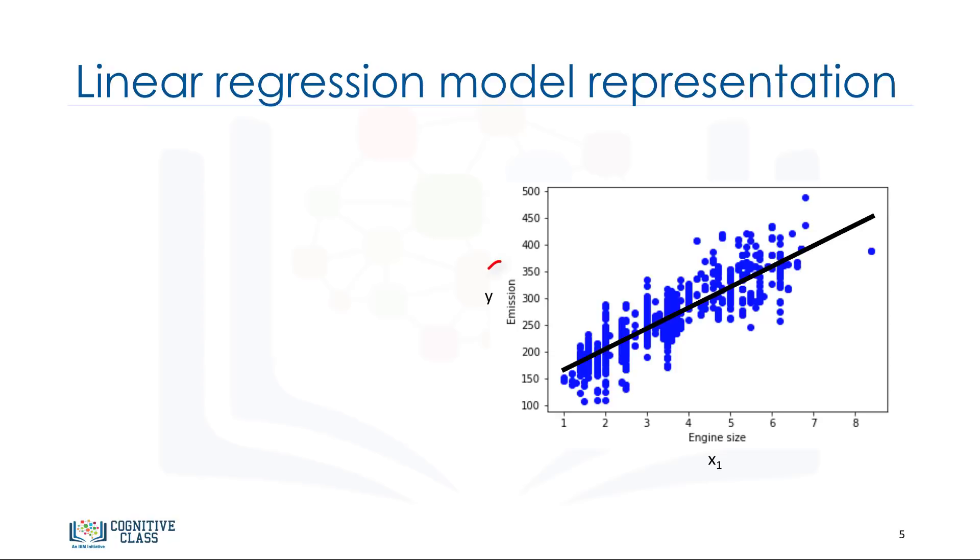Now, let's talk about what the fitting line actually is. We're going to predict the target value y, in our case using the independent variable engine size, represented by x1. The fit line is shown traditionally as a polynomial. In a simple regression problem, a single x, the form of the model would be theta 0 plus theta 1 x1. In this equation, y hat is the dependent variable or the predicted value, and x1 is the independent variable. Theta 0 and theta 1 are the parameters of the line that we must adjust. Theta 1 is known as the slope or gradient of the fitting line, and theta 0 is known as the intercept. Theta 0 and theta 1 are also called the coefficients of the linear equation.